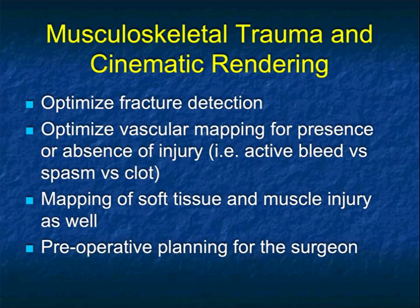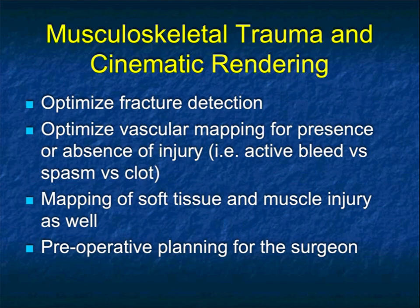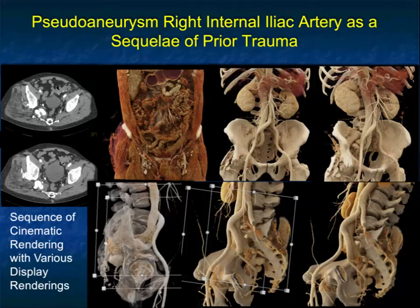An area we've also written about, and I think is probably underutilized, is musculoskeletal trauma. It certainly optimizes fracture detection, and in complex injuries helps with looking for vascular injury, muscle injury, as well as soft tissue injury. It really gives you a total visualization of a patient's trauma, which we use for planning — whether it's for surgery or for non-surgical intervention.